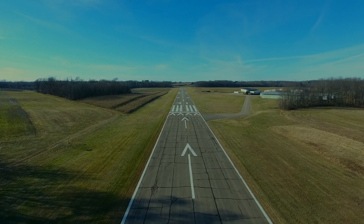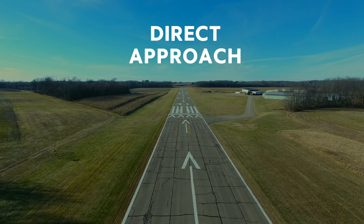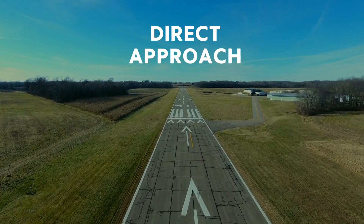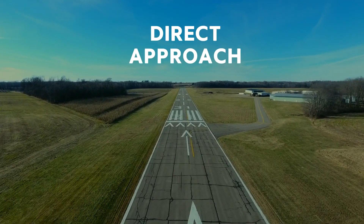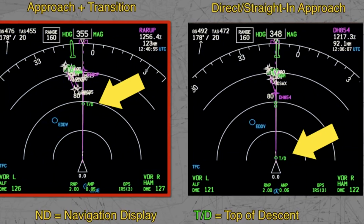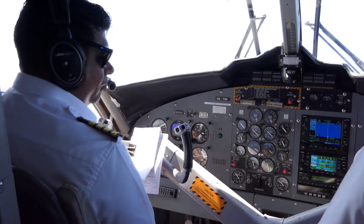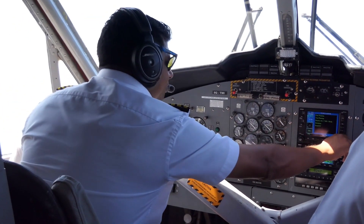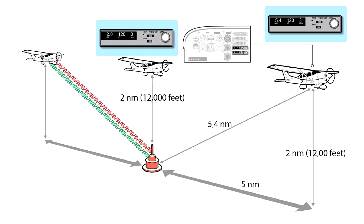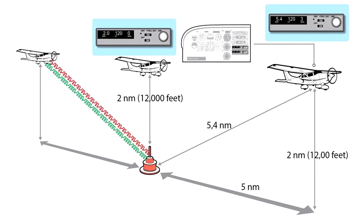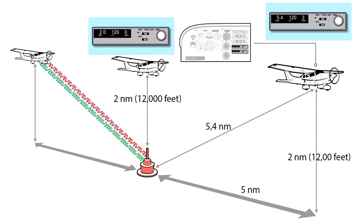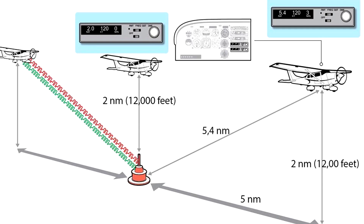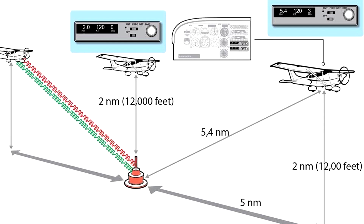Due to the fact that the top of the descent marker for a direct approach is the first one the aircraft will encounter, the pilot will calculate this one first. First, the pilot needs to know how far they are from the runway. They do this by tuning in to the distance measuring equipment, or DME, that is closest to the airport.